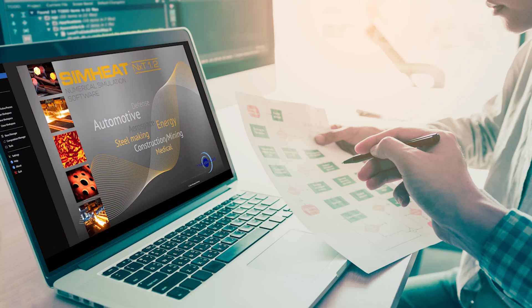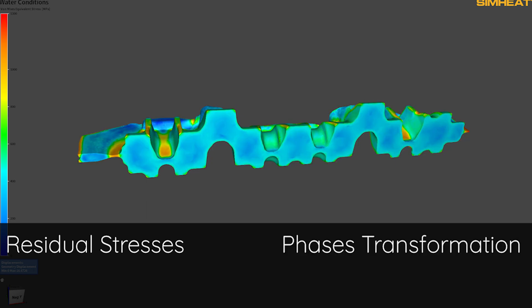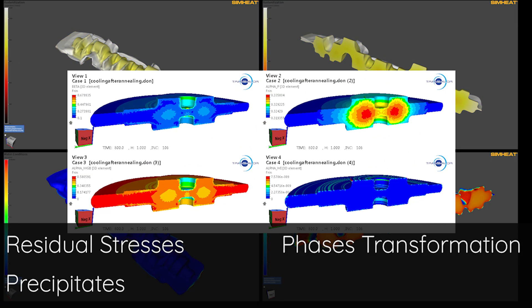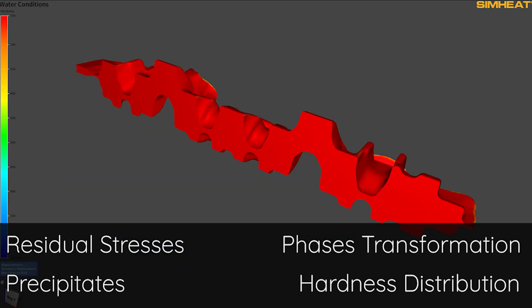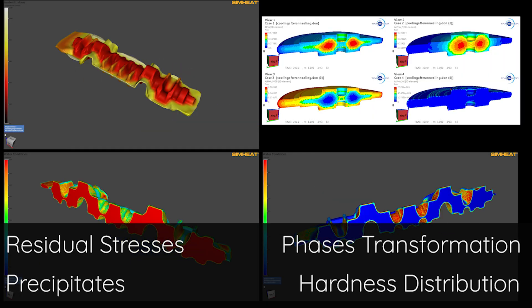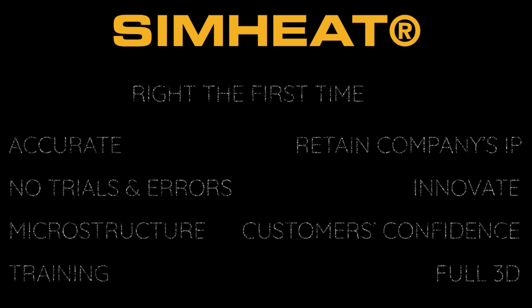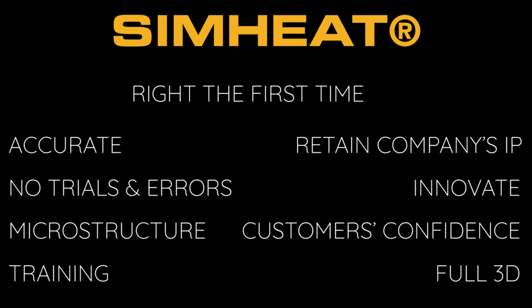Crucial information such as residual stresses, phase transformation for steel and titanium alloys, precipitates for aluminum and final hardness distribution are only a few of the results provided by SimHeat. With such information you can get it right the first time, predict accurately, remove trial and error campaigns, understand microstructural transformation, train your team efficiently, retain your company knowledge properly, innovate without fear of failing, increase customer confidence and analyze your part as never before thanks to SimHeat full 3D modeling.